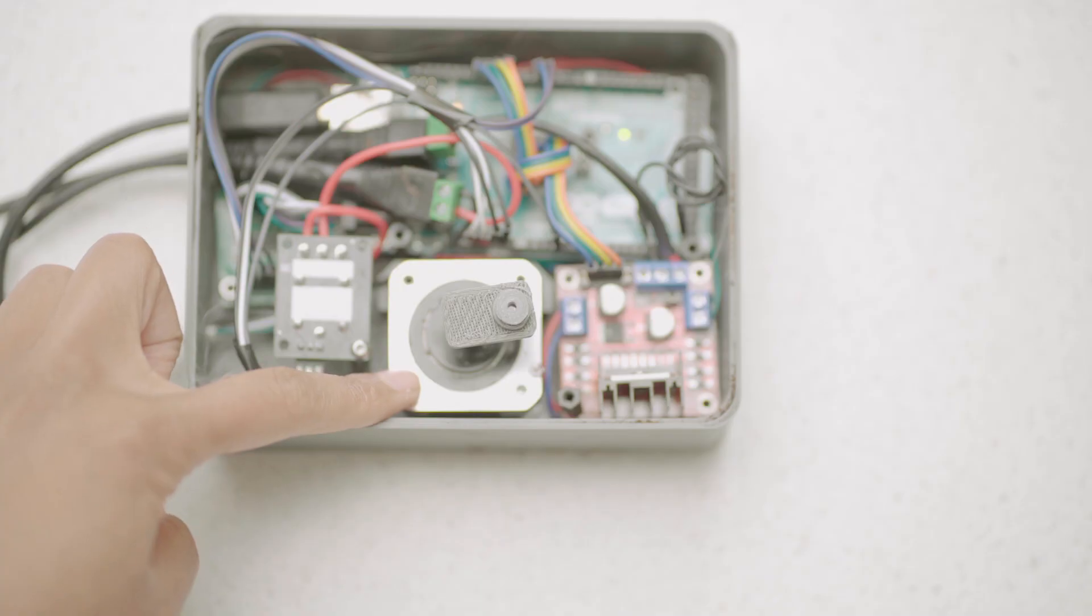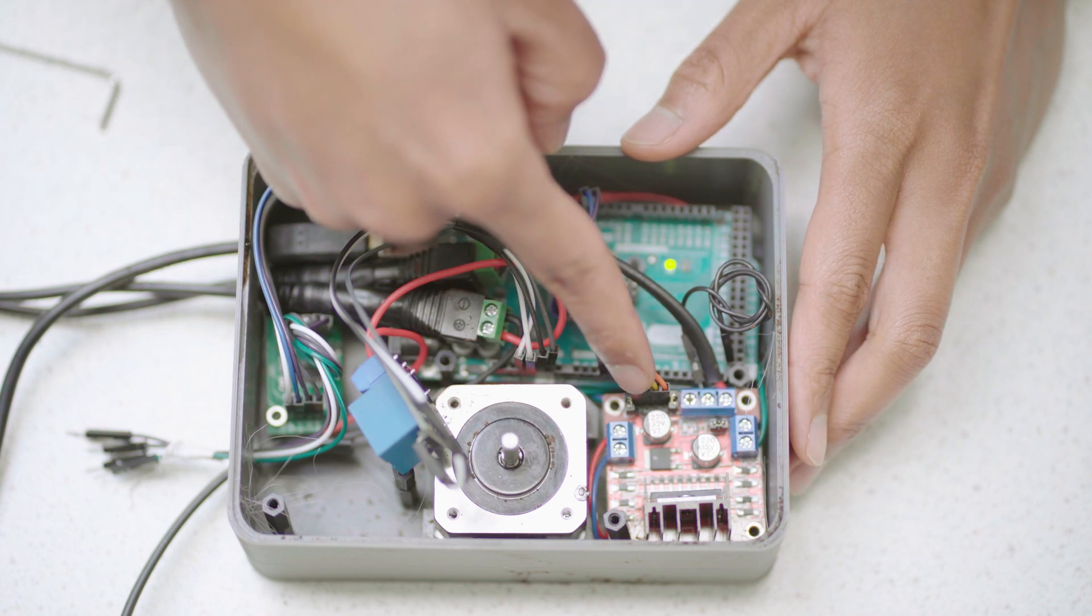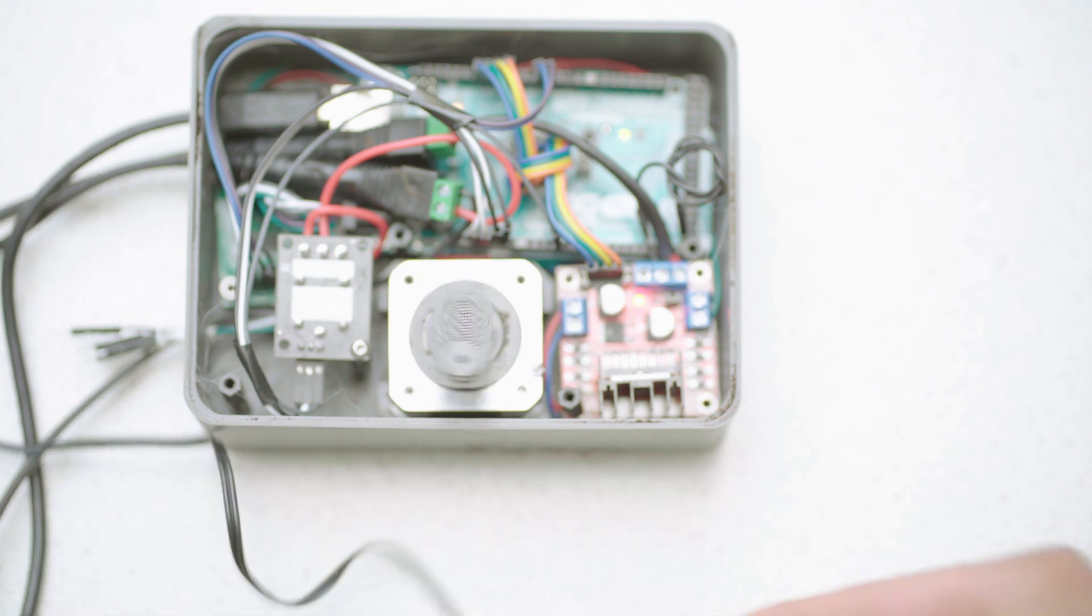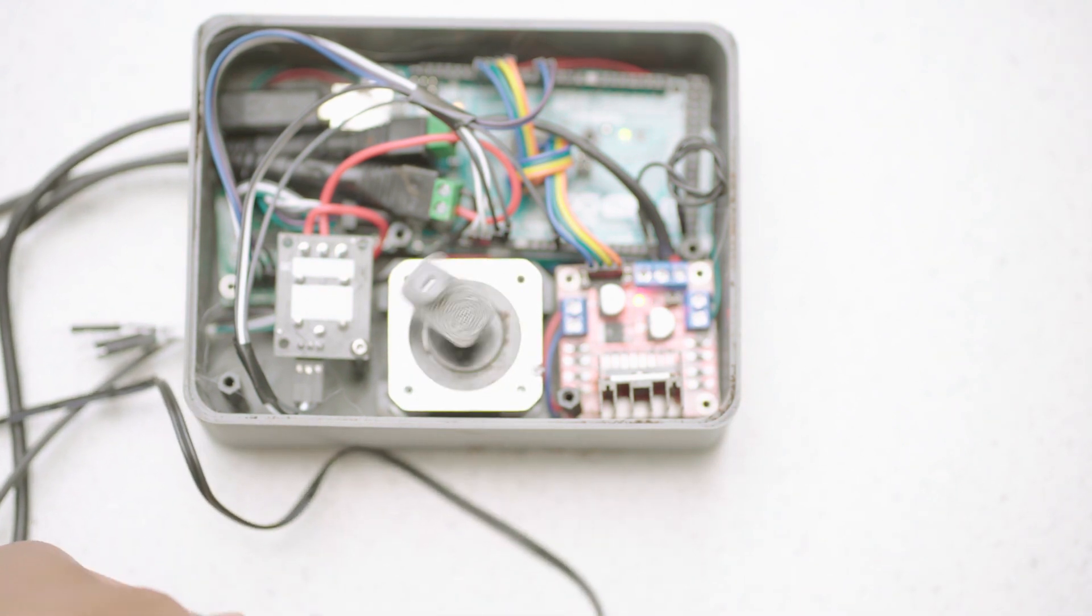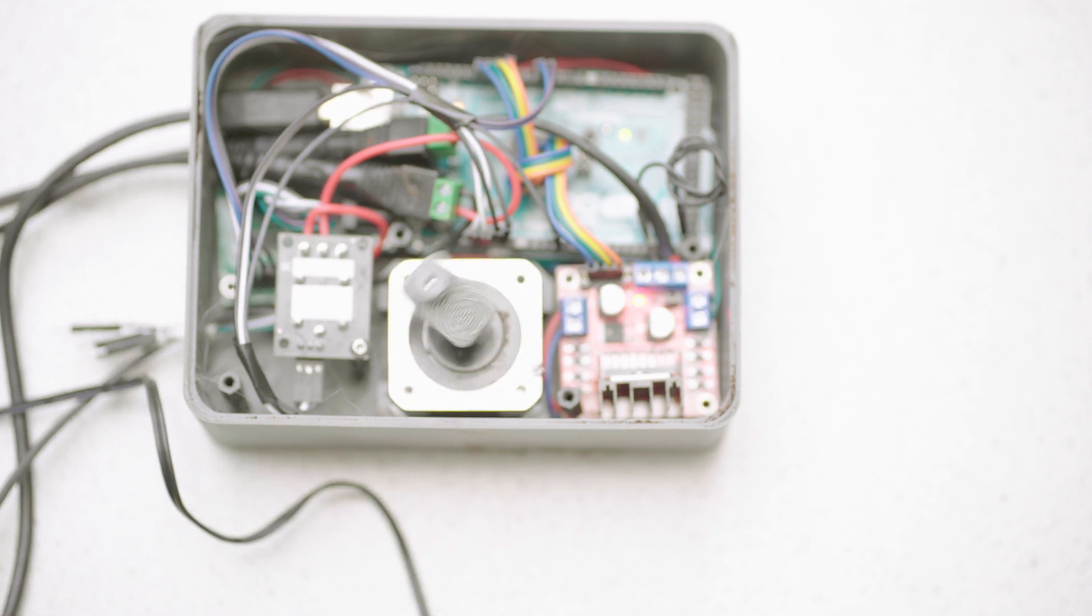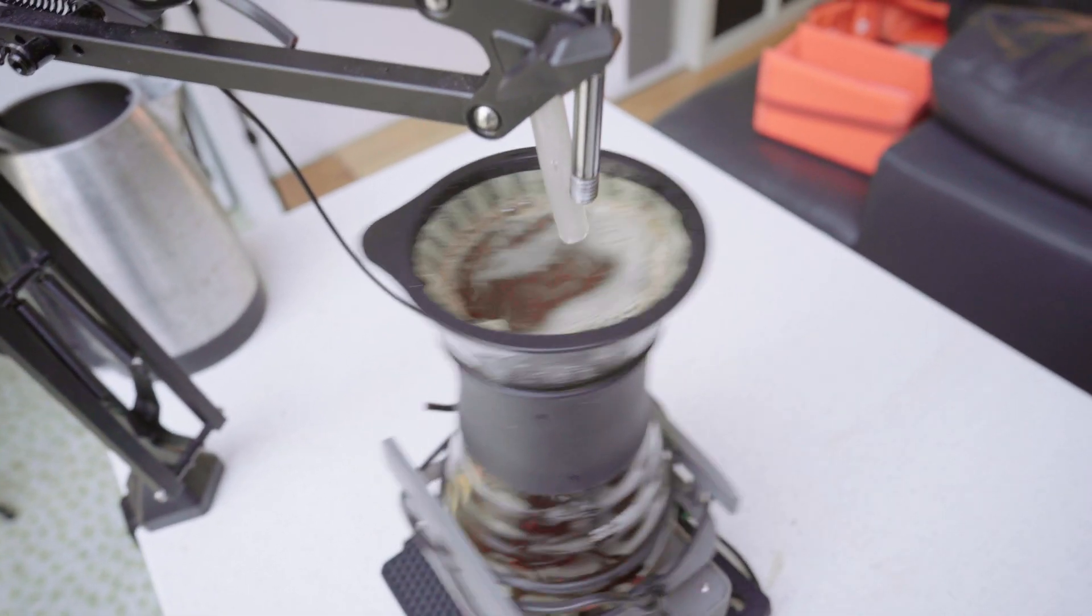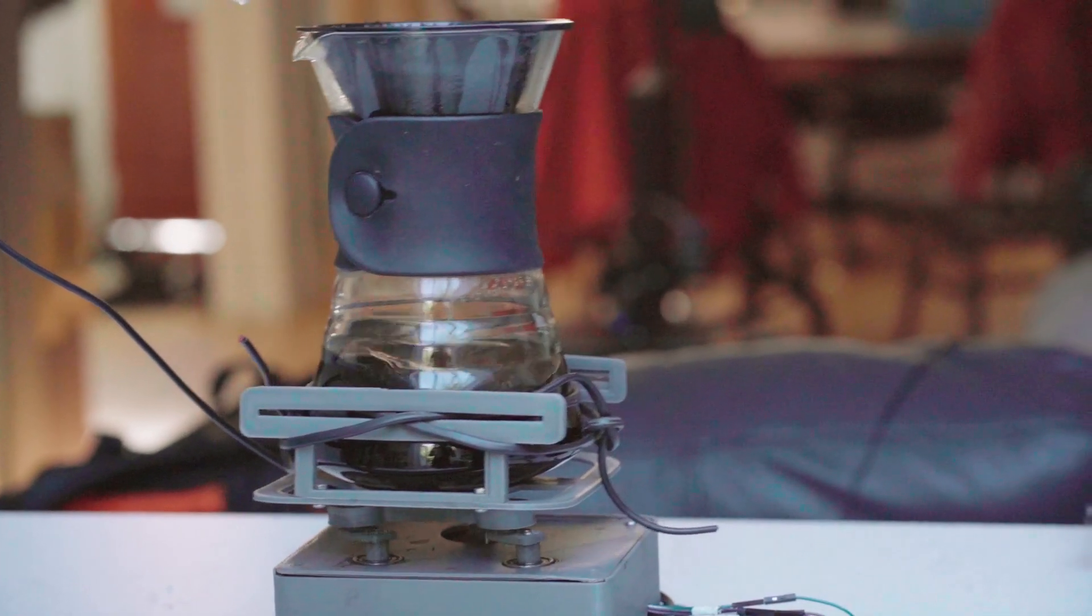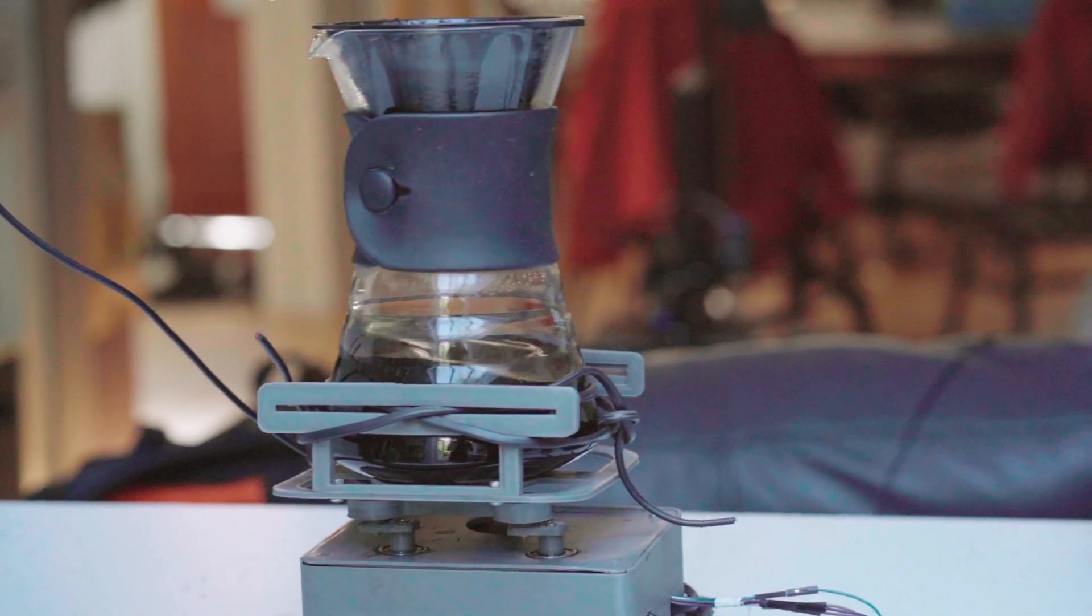Powering this rotation is a stepper motor here which is driven by this stepper motor driver. The stepper motor driver is connected to the Arduino and once powered, we can control the stepper motor to run at different speeds. Having different speeds is important because we'll need a relatively higher speed during the blooming phase, a lower speed during regular pouring, and a higher speed again towards the end to create a flatbed. The design for this overall platform is an adaptation of something that I found on Thingiverse and I'll post the link in the description below.